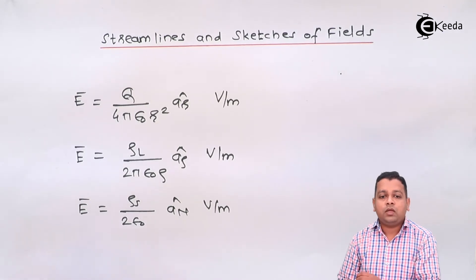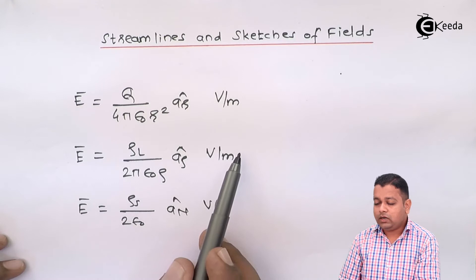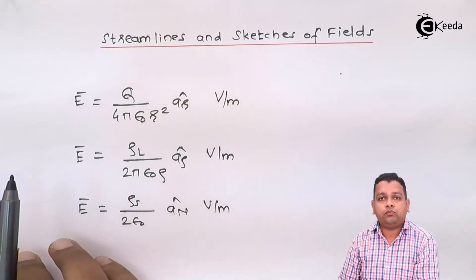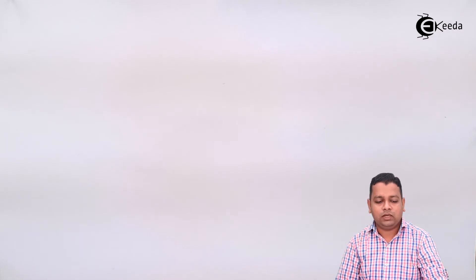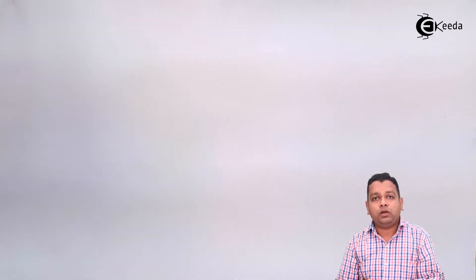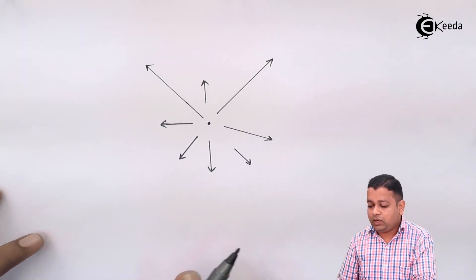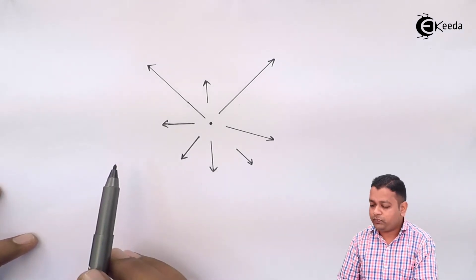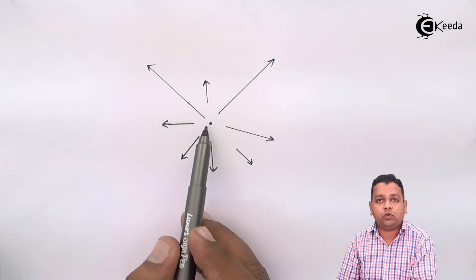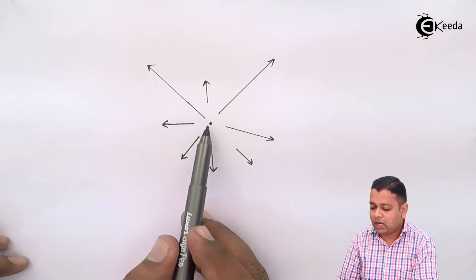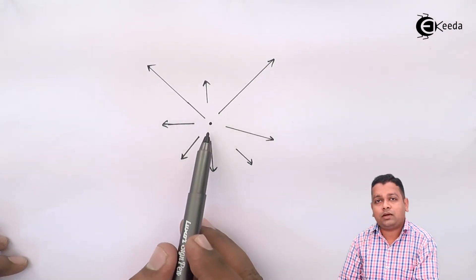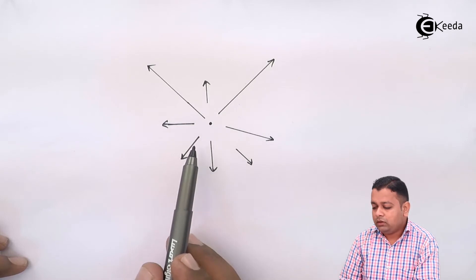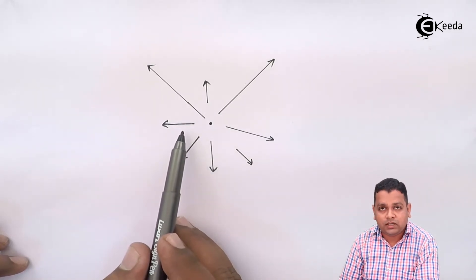Now let us take the electric field is produced because of uniform infinite line charge. So if we try to sketch that particular electric field, we first of all take the cross section of the line. So cross section of the line will be a point. So we can draw this kind of diagram. So this is the point that is cross section of the uniform infinite line charge and because of that, let us say differential charge...